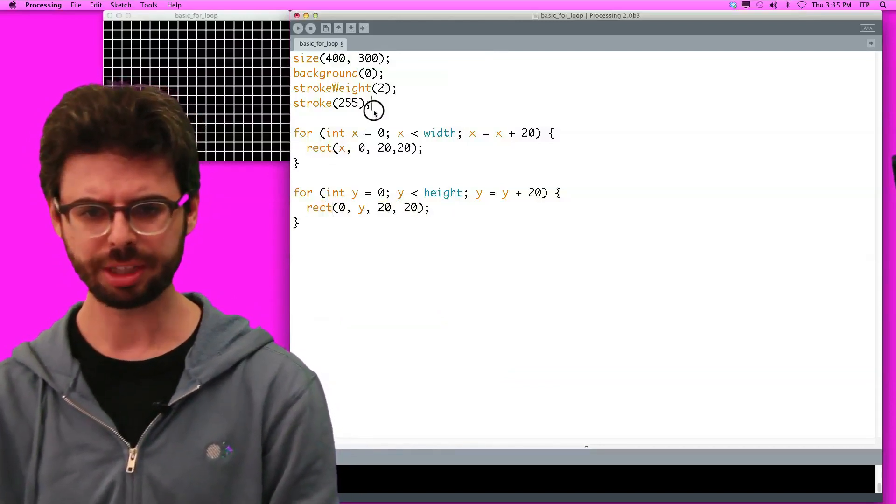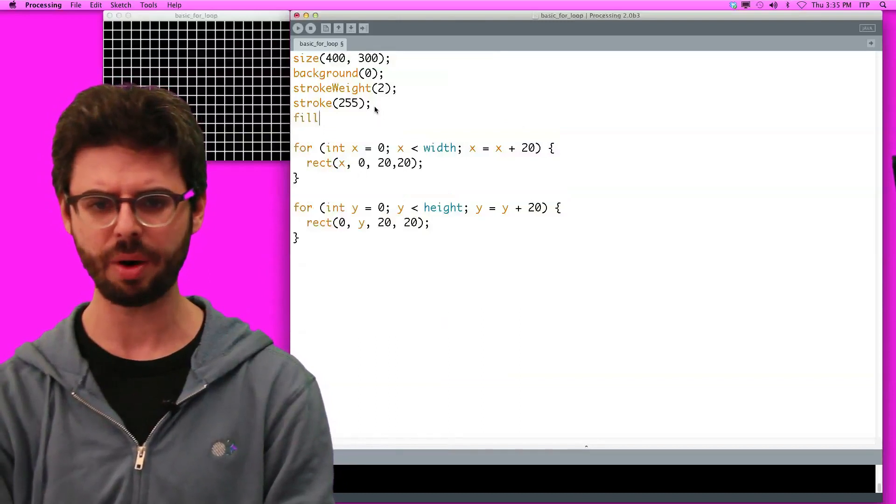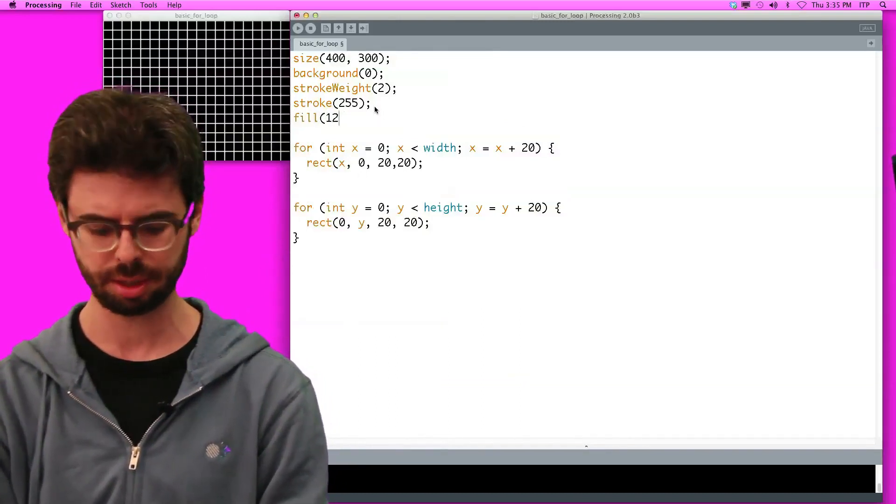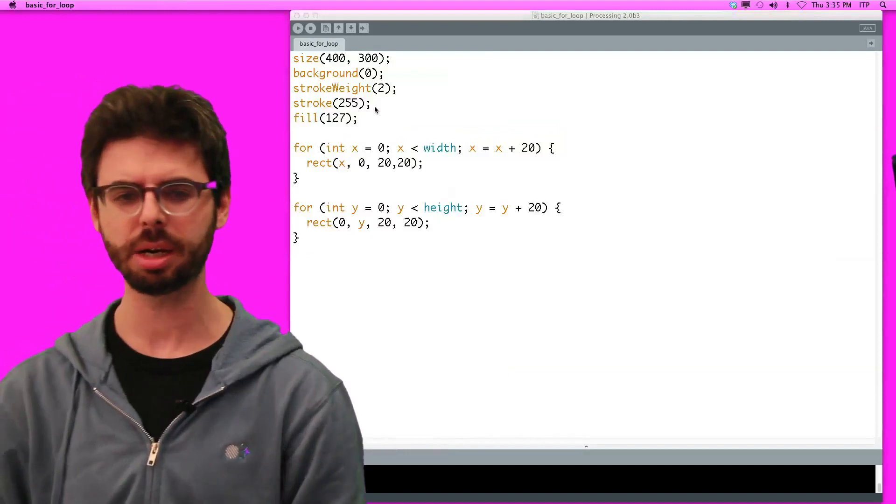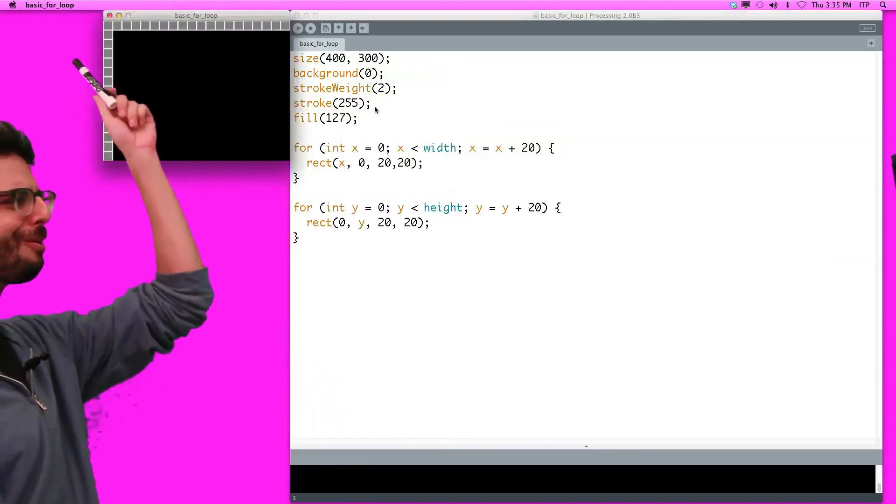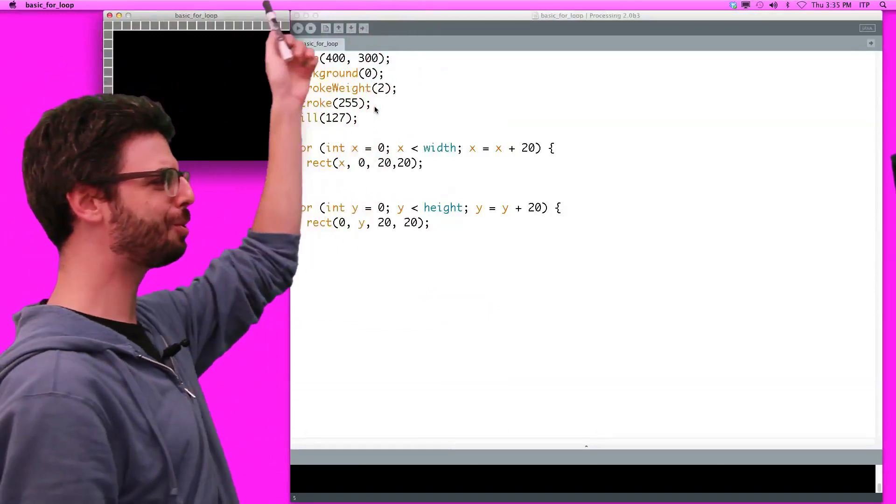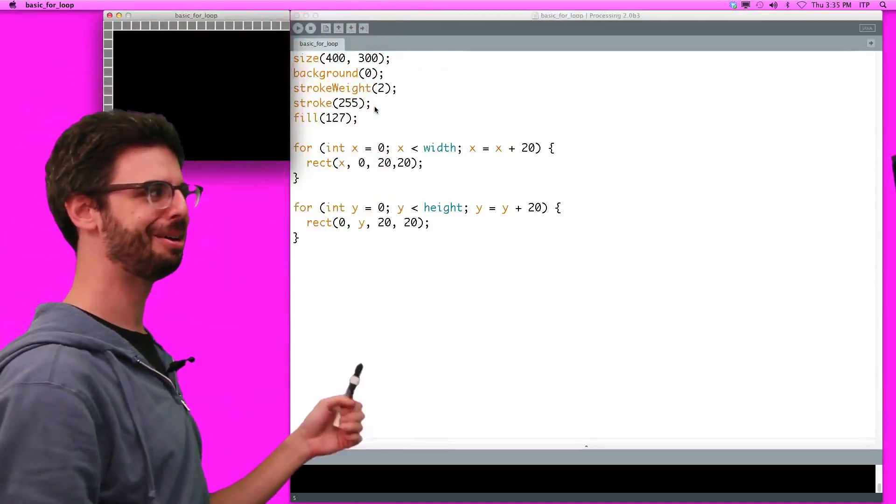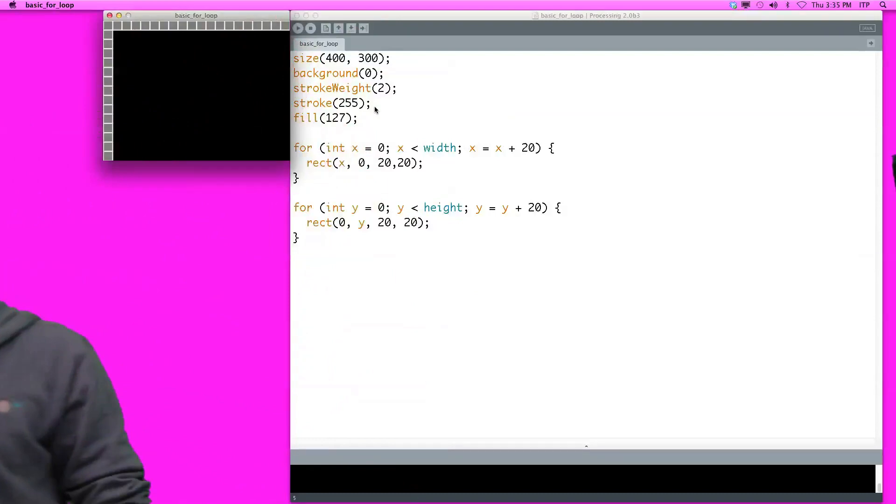And let's just do a fill now of 127, just so we give it, we'll worry about random later. Oh, we're close. But we have a loop to draw rectangles across, and a loop to draw rectangles down. How do we get the ones in the middle? Well, let's think about that.